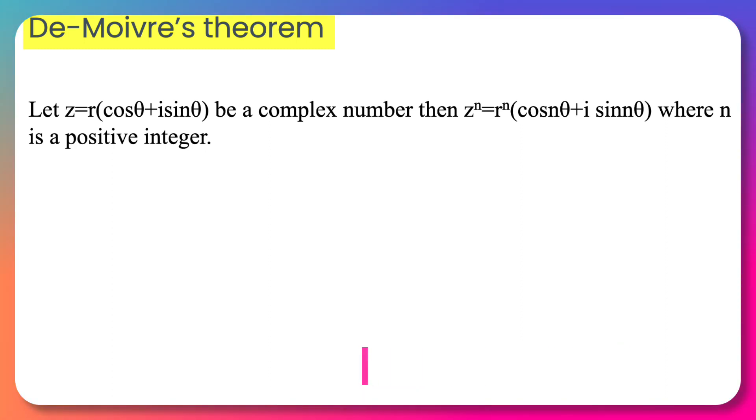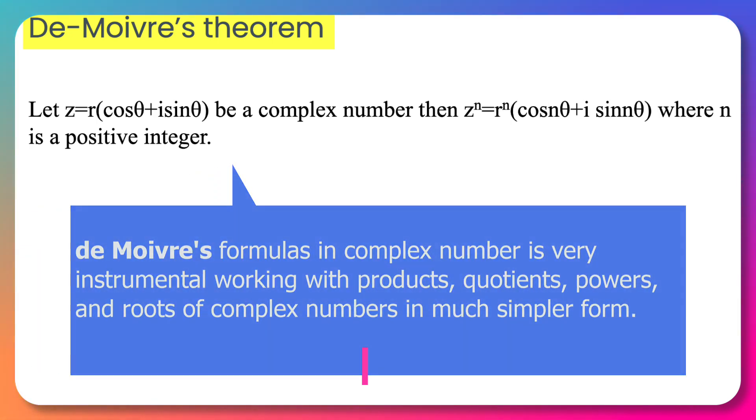Now we are going to work with the formula developed by French mathematician Abraham de Moivre, which is very instrumental for working with products, quotients, powers and roots of complex numbers in much simpler form.